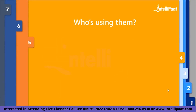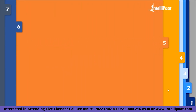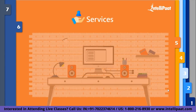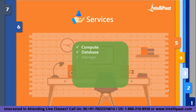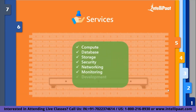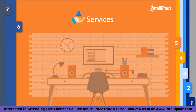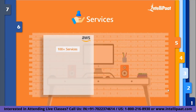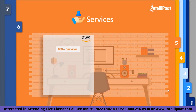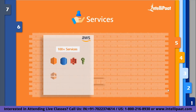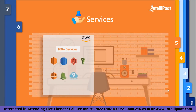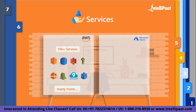So now after discussing their establishment in the market, let's talk about what each provider has to offer in terms of services. The services I am going to compare come under the following domains: Compute, Database, Storage, Security, Networking, Monitoring, Development, and Internet of Things. AWS and Azure both cover 100-plus services. Some of the services that AWS covers are EC2, AWS RDS, S3, AWS IAM, VPC, CloudWatch, Cloud9, AWS IoT Core, and many more.